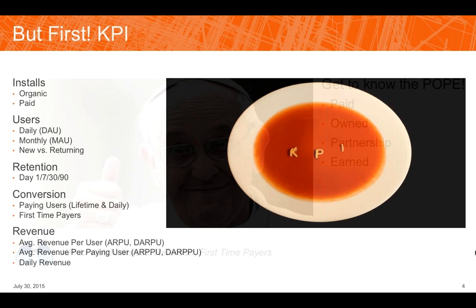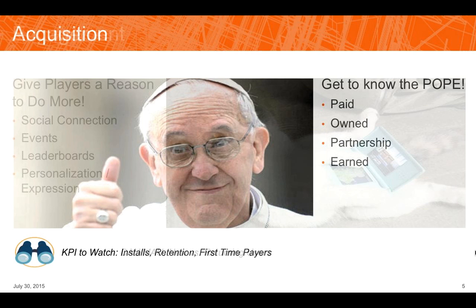Now that we understand KPIs, let's look at the four areas, starting with acquisition. There's always a lot of focus on paid acquisition because it's expensive and the hardest to manage effectively. But paid acquisition is not the only way to get users into your game. I use the acronym POPE — Paid, Owned, Partnership, and Earned media. You'll notice paid is only one fourth of that. Paid is easy because you can see exactly how many users are coming in and control it by spending more or less.